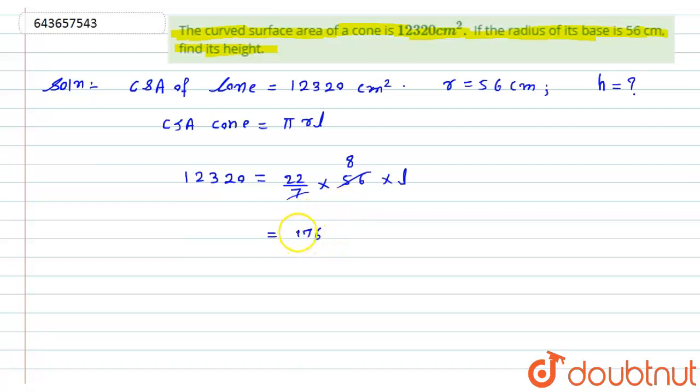So it will be 176 into l equals 12,320. From here I will get the value of l equals 12,320 divided by 176, which is 70 centimeter.